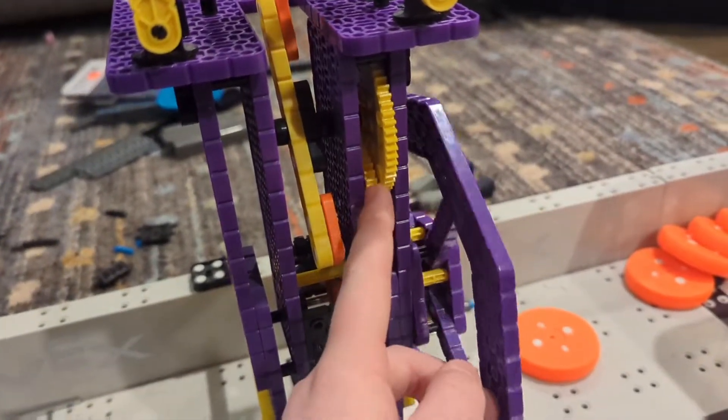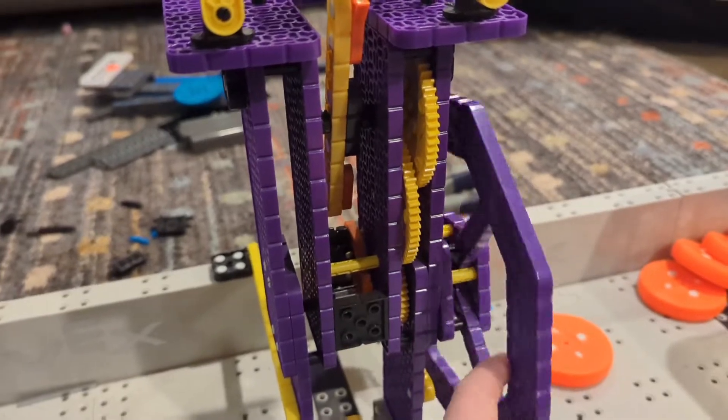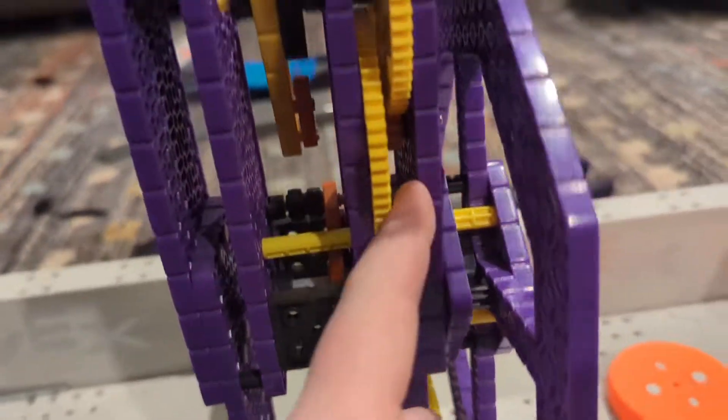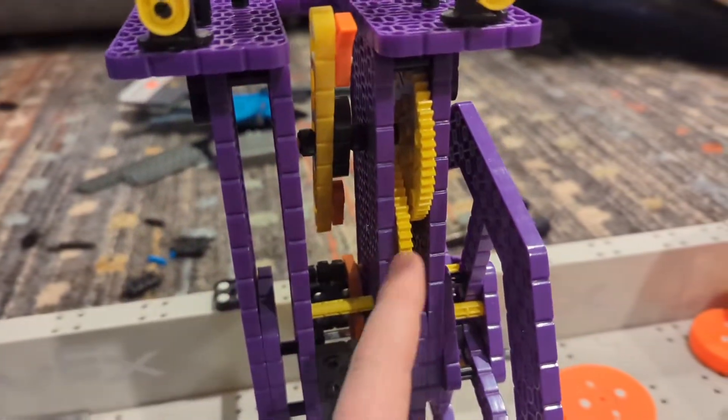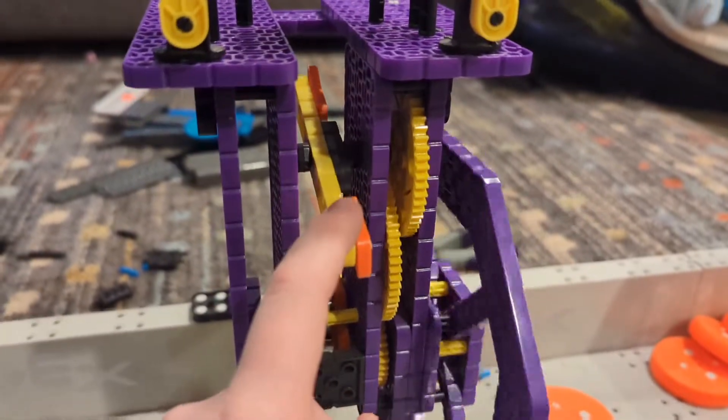And the other reason is, if you power this, it goes way faster. This goes from a medium to a big, to a small, to another big. And that creates a lot of torque, which means this is really easy to turn. But it doesn't spin this very fast.